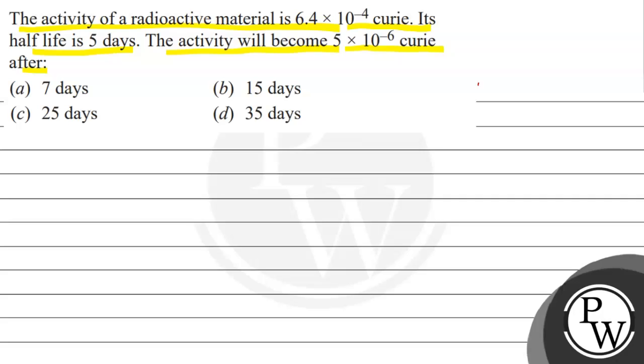The basic key concept is a formula which we will use and that is related to activity, because this question is based on the activity of radioactive material. The formula is: A is equals to A naught 1 by 2 raised to power t upon half lifetime.